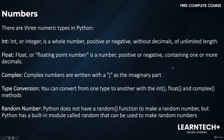Welcome back. In this video we're going to talk about numbers. There are three numeric types in Python. Integer, or int, is a whole number positive or negative without decimals of unlimited length. Float, or floating point number, is a number positive or negative containing one or more decimals. Complex numbers are written with a j as the imaginary part.